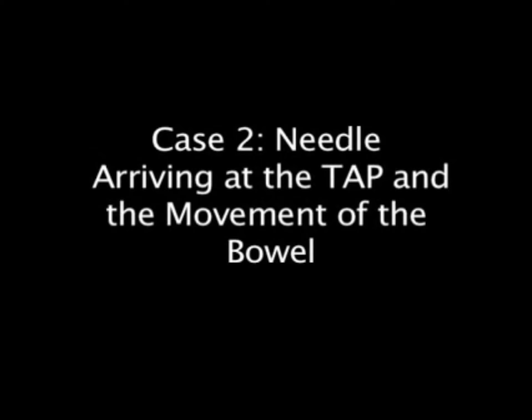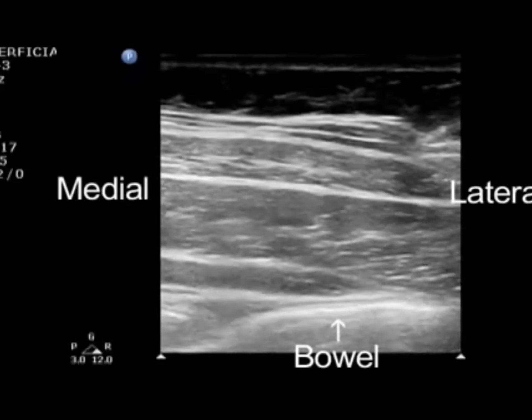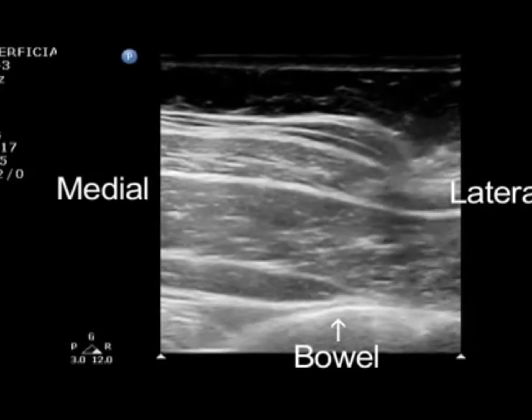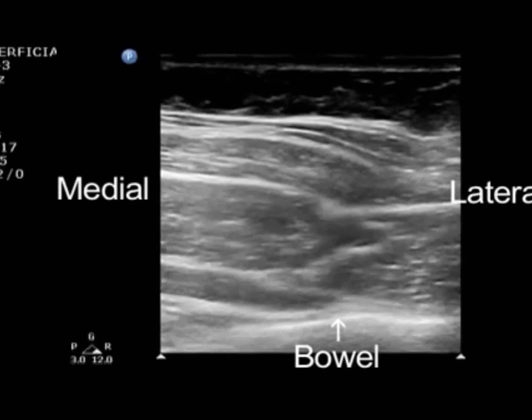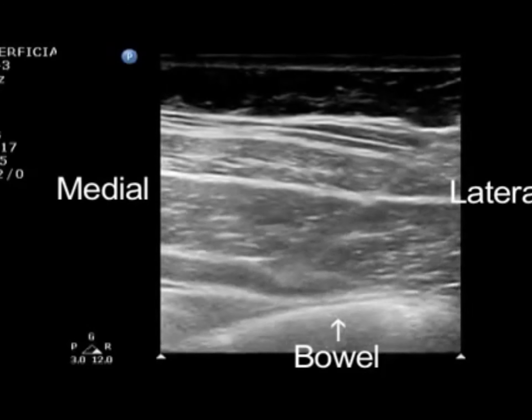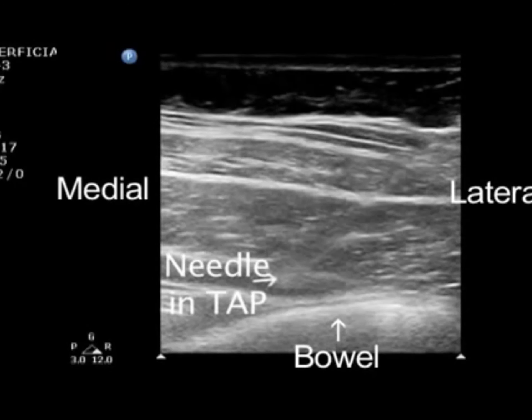Case 2 demonstrates both the needle arriving at the TAP and the movement of the bowel. As the needle enters from screen right, notice the movement of the bowel at the bottom aspect of the screen. With the image frozen, one can see the distance between the TAP and the bowel. This distance is approximately 1 centimeter.